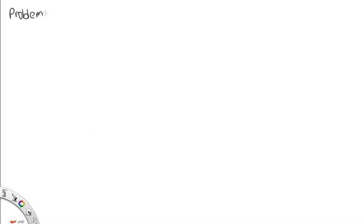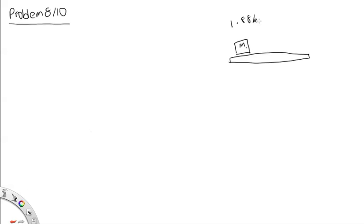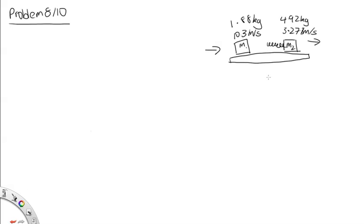In this problem we have a frictionless table with two masses. Mass 1 is 1.88 kg moving at 10.3 m/s, and mass 2 is 4.92 kg moving in the same direction at 3.27 m/s. Since mass 1 is faster, it will catch up to mass 2. Attached to mass 2 is a spring with spring constant k = 11.2 N/cm, or 1,120 N/m.